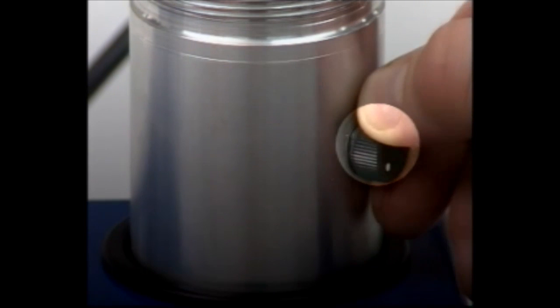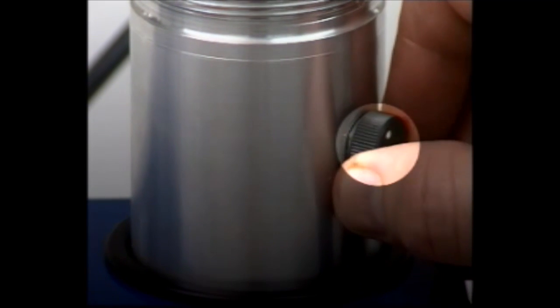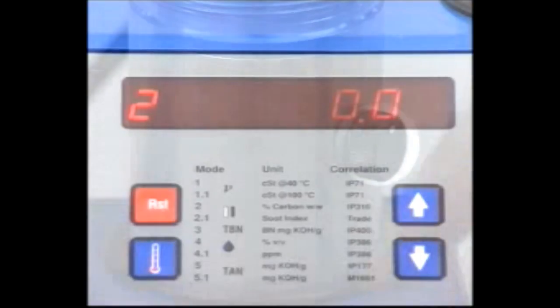Rotate the zero knob on the side of the cell fully anticlockwise, then slowly clockwise until the reading reaches zero.